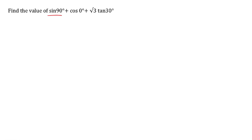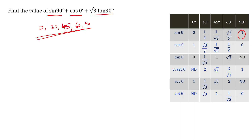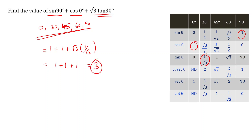Find the value of sin 90 degrees plus cos 0 degrees plus root 3 times tan 30 degrees. From the trigonometric ratios table, sin 90 degrees equals 1, cos 0 degrees equals 1, and tan 30 degrees equals 1 by root 3. So root 3 times 1 by root 3 equals 1. Therefore the expression equals 1 plus 1 plus 1, which equals 3.